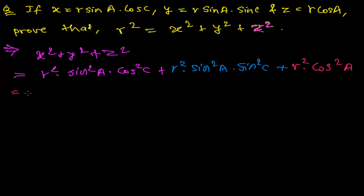So now in next level we are getting everywhere R is common. Here is also common R, here is also R, here is also R. So let me take out here first R square common. So I will get sin square A times cos square C plus sin square A times sin square C plus cos square A. Right?